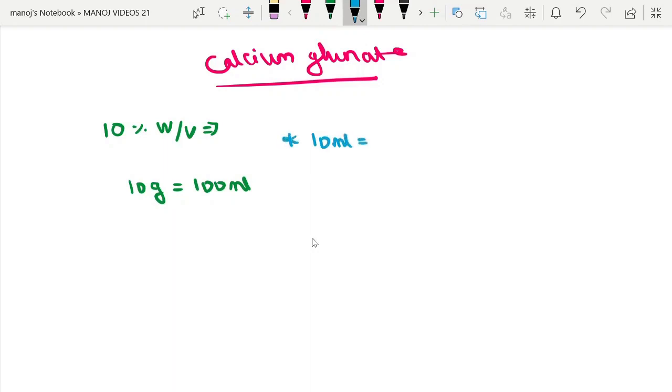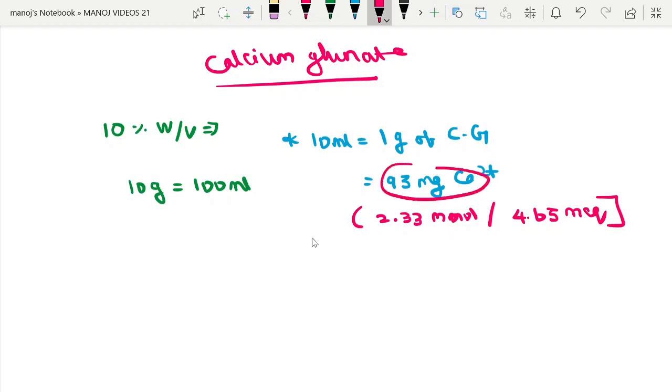1 gram of calcium gluconate, which is equivalent to 93 mg of elemental calcium, which in turn is equivalent to 2.233 millimoles of calcium or 4.65 ml equivalent of calcium. We are more concerned with the elemental calcium content.